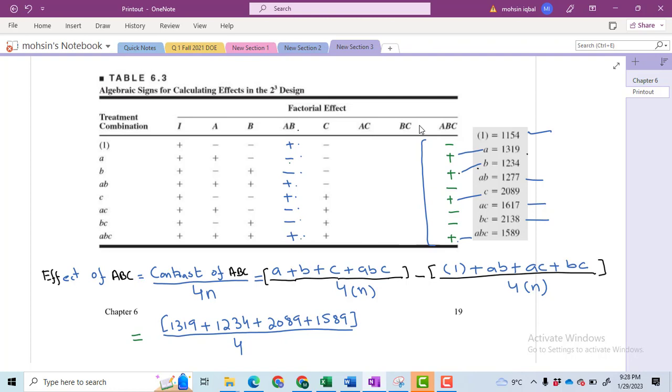So in place of N we will write 2, then minus, again bracket. The one value is 1154 plus AB equals 1277 plus AC equals 1617 and then BC equals 2138. Bracket close, divided by 4—we have two replications.